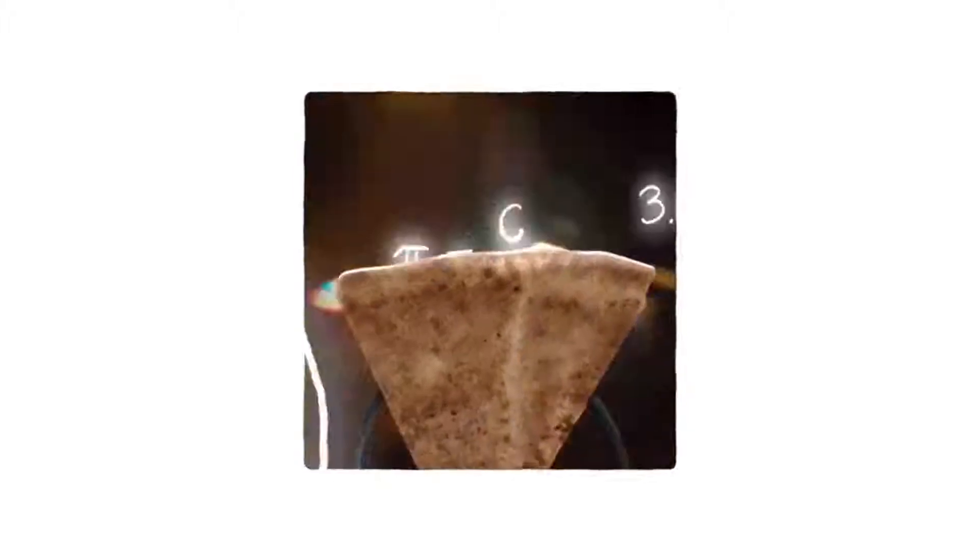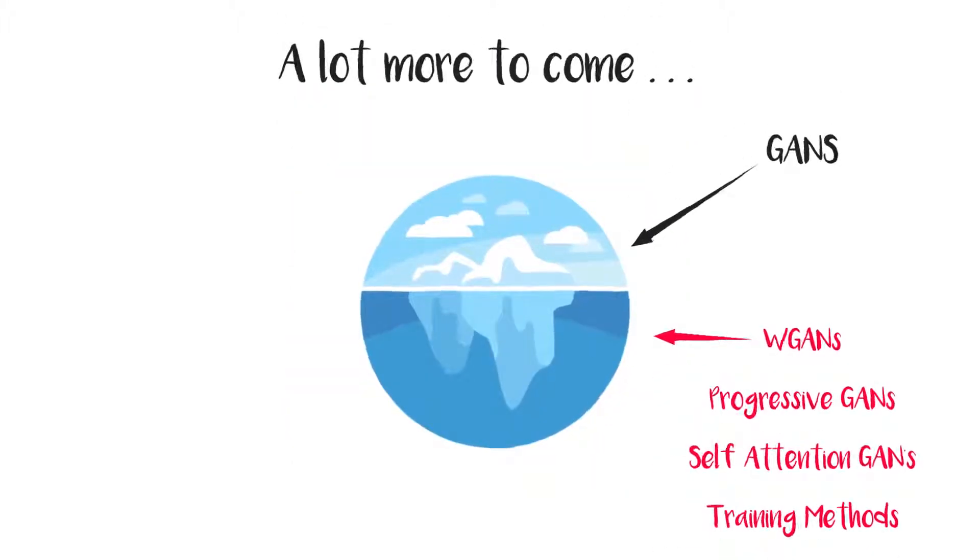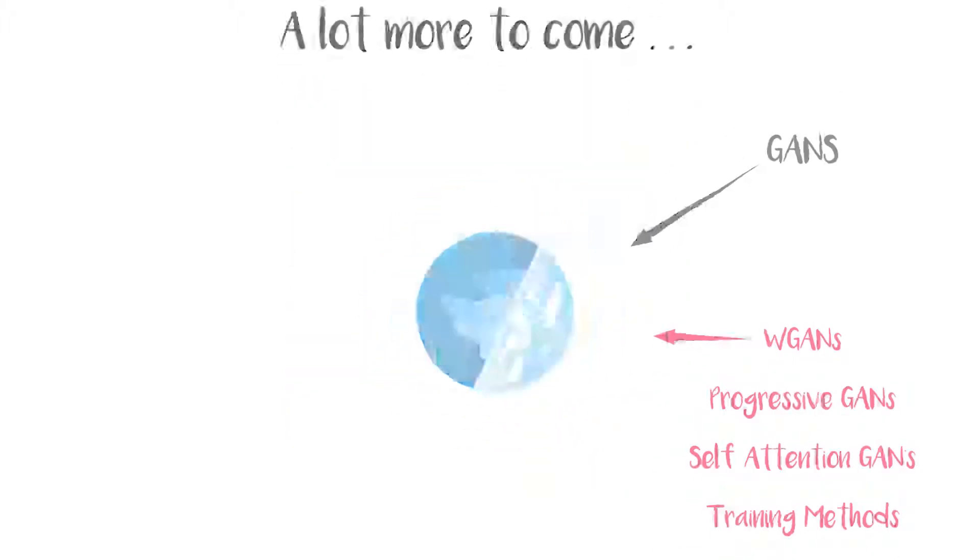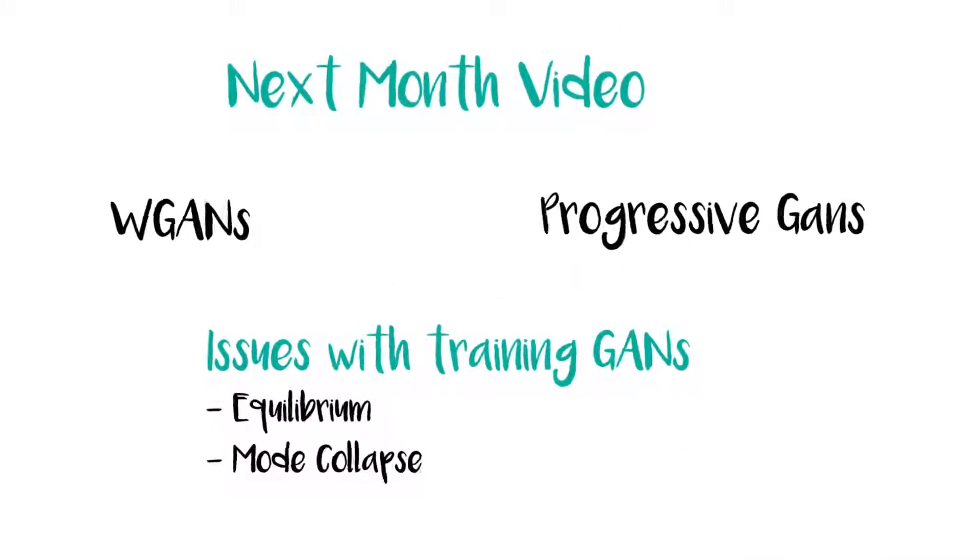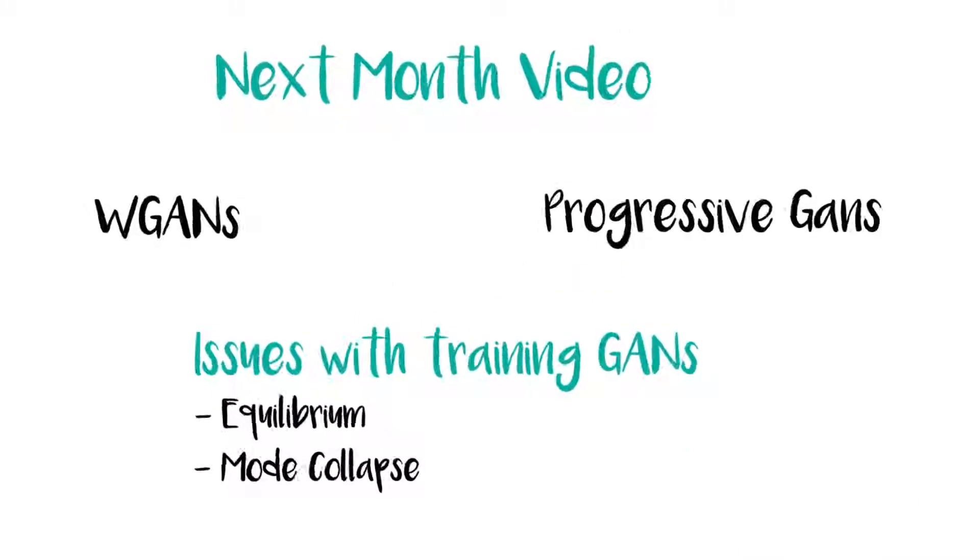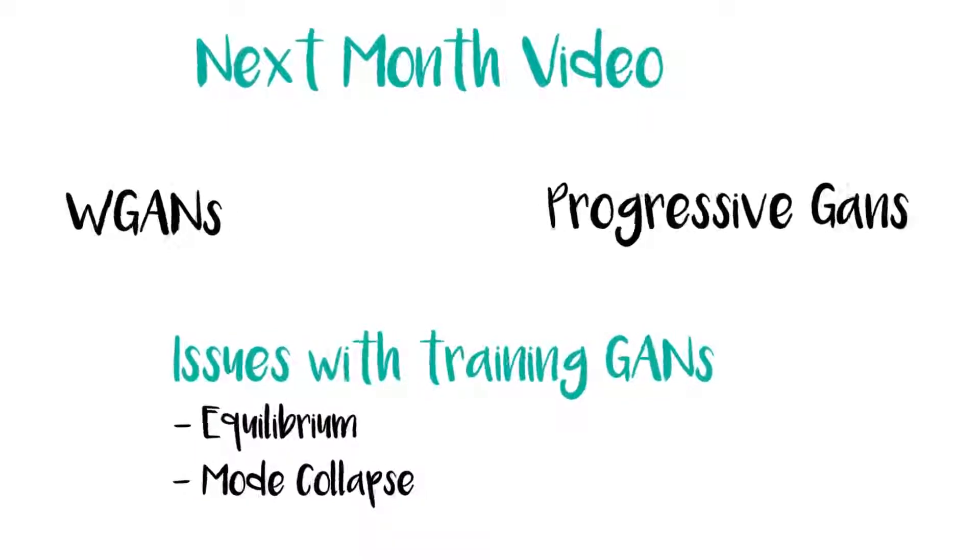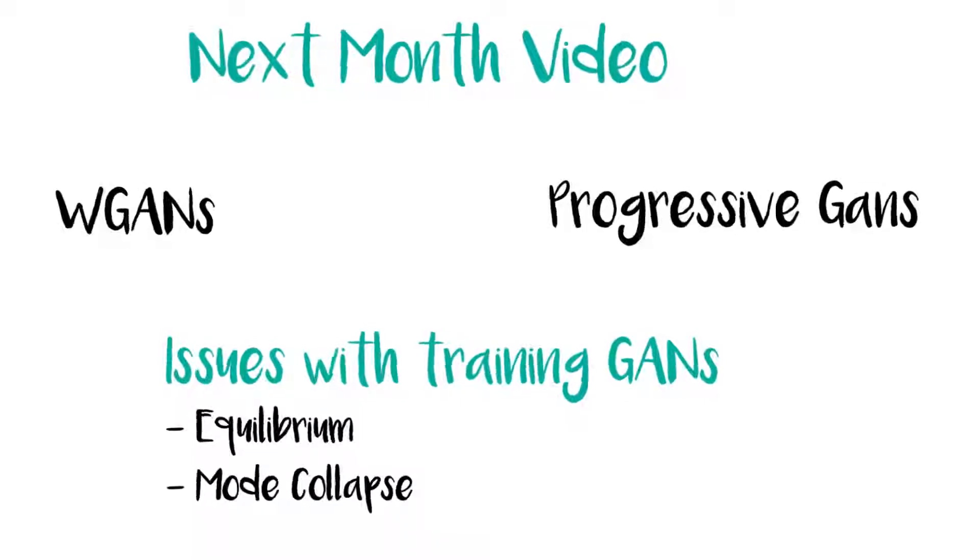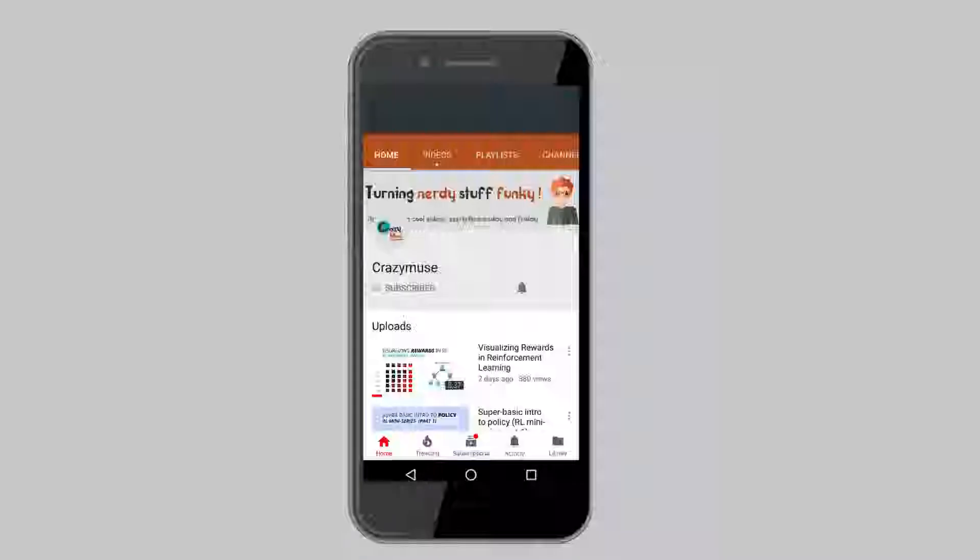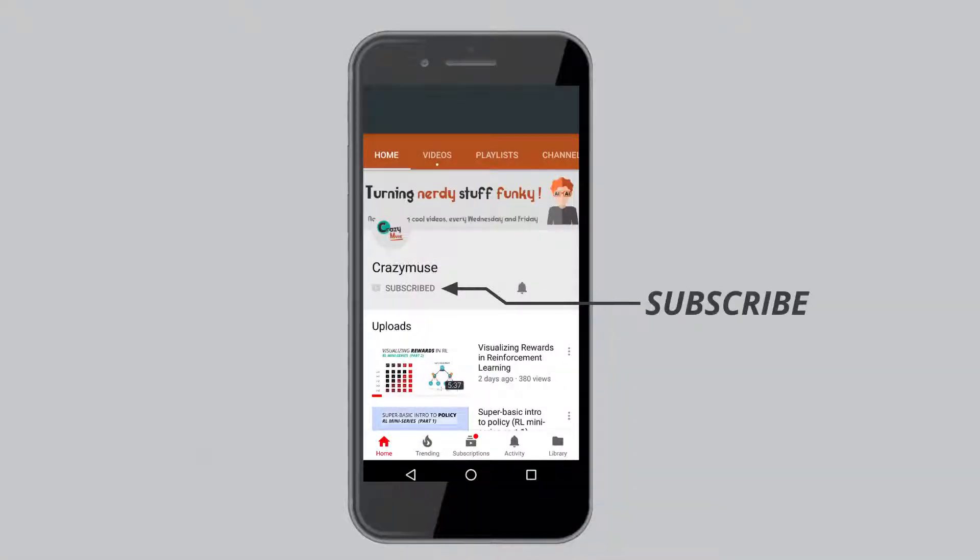This video is only the tip of the iceberg. There's a lot more to learn, like what's mode collapse, why it's difficult to achieve equilibrium in GANs, and other approaches like WGANs. We'll cover these in subsequent videos. Don't forget to subscribe and press the bell icon to never miss an update from Crazy Muse.